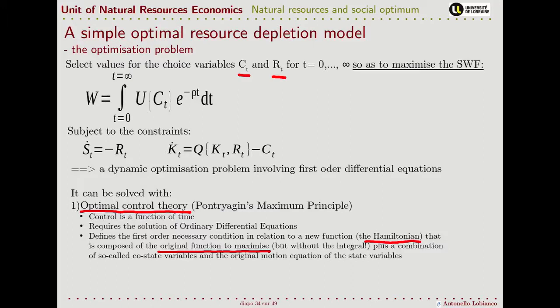the Hamiltonian is composed of the original function that we want to maximize, but we notice here that we don't need to put the integral, plus, for each constraint that in this case are equations of motion, are differential equations, what is called the costate variables, that represent the equivalent of the Lagrangian multiplier.